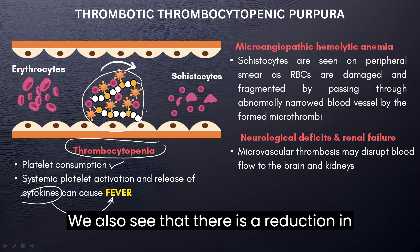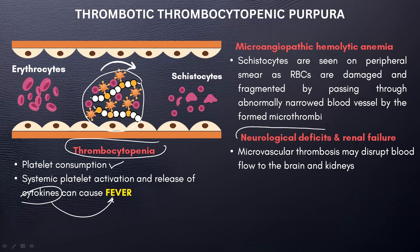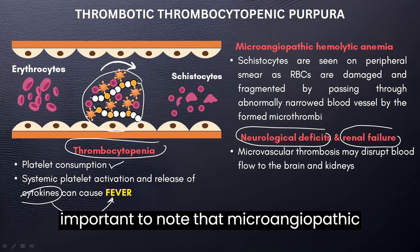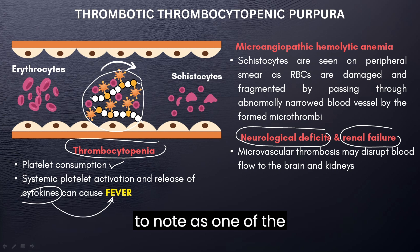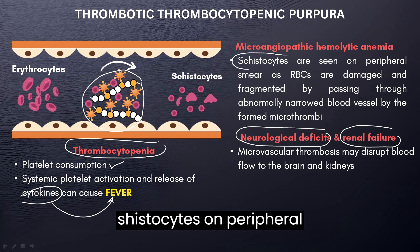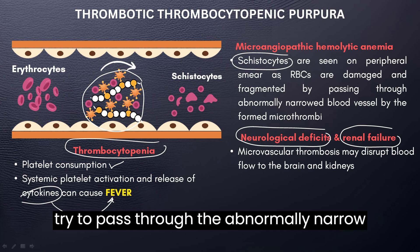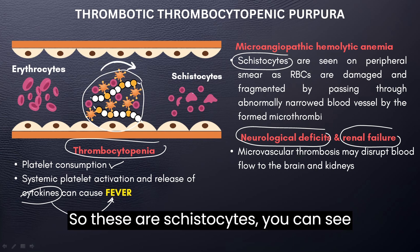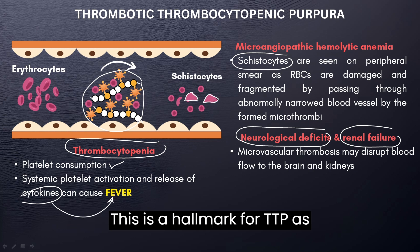There is also a reduction in perfusion of vital organs, which explains the neurological deficits as well as the renal failure that may be seen with TTP. Importantly, microangiopathic hemolytic anemia is a hallmark of TTP. We see schistocytes on peripheral blood smear — these are red blood cells that are damaged and fragmented as they try to pass through the abnormally narrowed blood vessels due to microthrombi. Schistocytes may take the shape of a triangle or sometimes a helmet, and this is a hallmark for TTP.